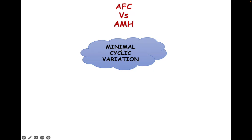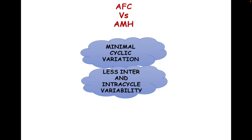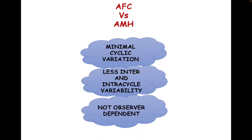So that is one advantage of AMH over AFC. The second advantage is less inter- and intra-cycle variability. Sometimes, especially in a patient with decreased ovarian reserve, in one cycle there may be five follicles but in another cycle only three. So the intra-cycle variability can be very high. But with AMH it is not like that — one AMH value is valid over a one-year period, so we need not check it again and again.